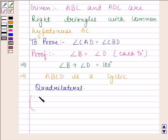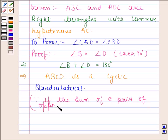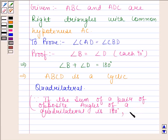Because if the sum of a pair of opposite angles of a quadrilateral is 180 degrees, then the quadrilateral is cyclic.